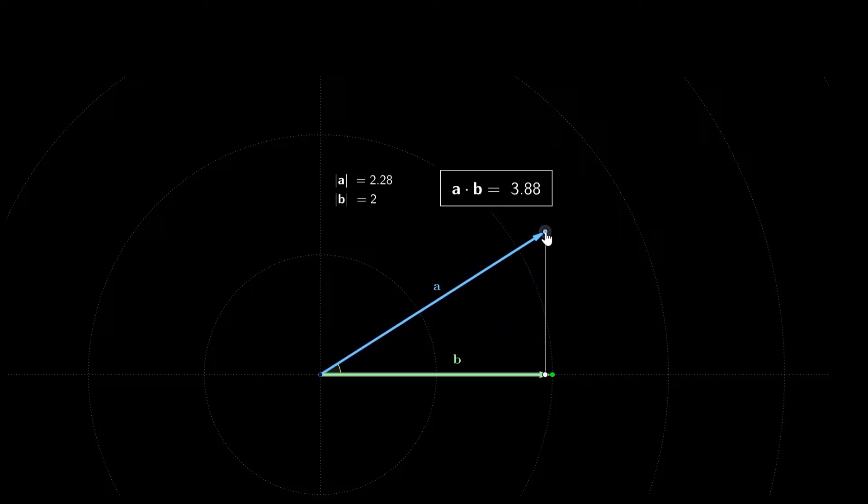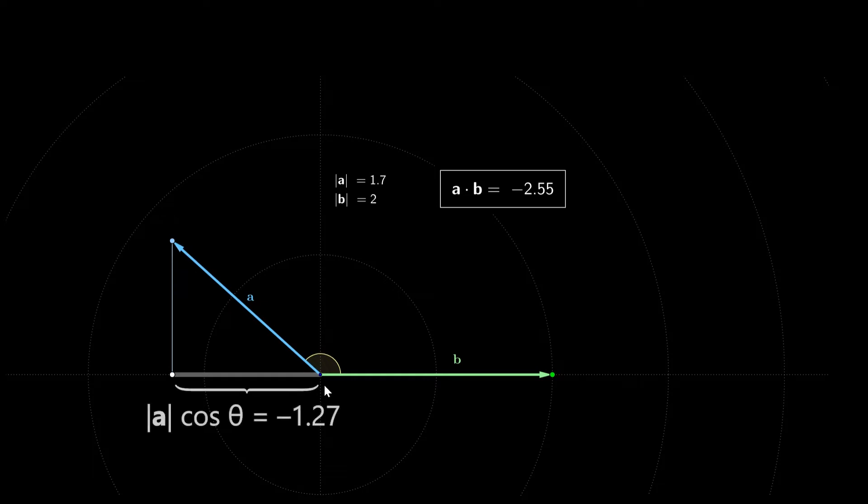If we move vector a, for example, we can make vector a such that its projection is 2. Now, the length of vector b is 2, the projection of vector a is 2, so the dot product is 2 times 2 equals 4. The dot product will change sign when vector a's projection points in the opposite direction to vector b, as you can see here.